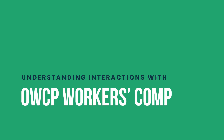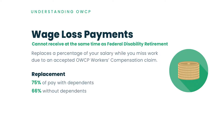The first benefit is wage loss payments — sometimes called total temporary disability. This is how you're paid from your workers' compensation claim while you're not working. It pays in two different forms: 75% of your salary if you have dependents, and 66% of your salary without dependents. Essentially it's a temporary benefit that pays you while you're not working while you have an accepted workers' comp claim.